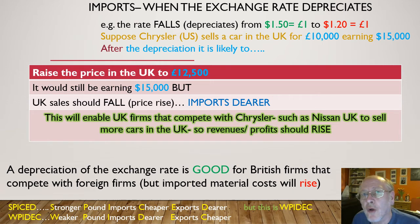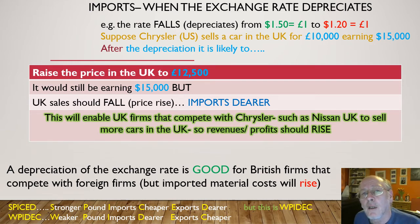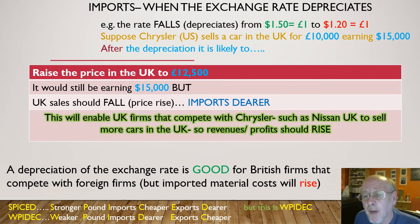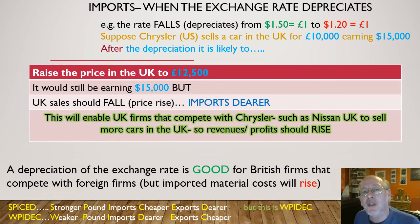A strong pound is not good for British exporters. As a counterbalance, the components that go into Nissan cars will be more expensive when the pound is weak, but most of a car's value is not raw components. The key mnemonic: weaker pound — imports dearer, exports cheaper. By and large, a fall in the exchange rate is good for British firms and good for employment.